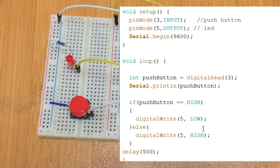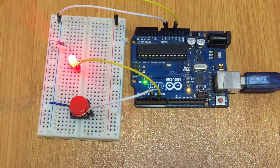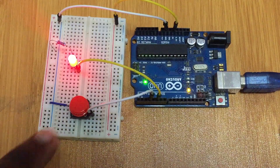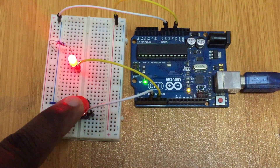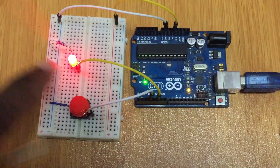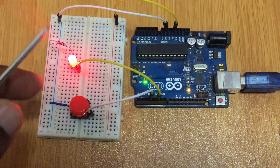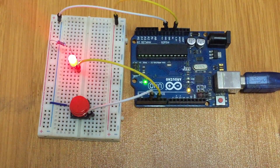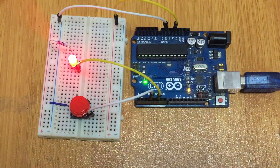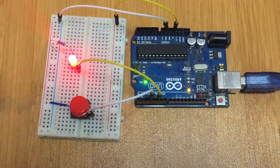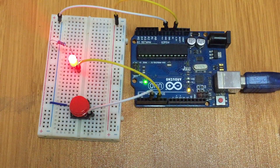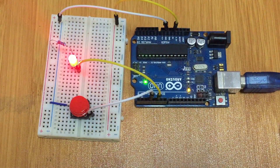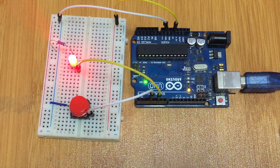Let's upload and see what happens. We discover that even before I press the button, the LED is already lighting, and even when I press it, nothing happens — there's no change. So in most cases that is what you call the floating input or floating pin condition.